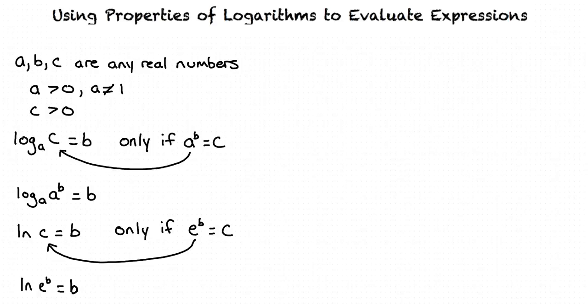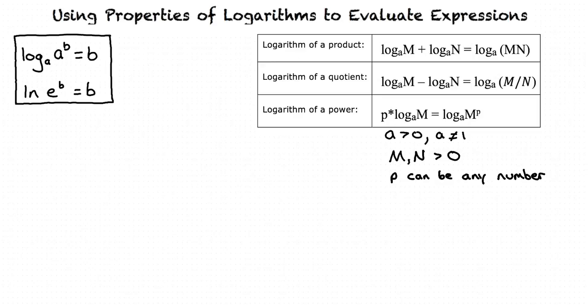Now let's look at the properties of logarithms. These are the three properties of logarithms we use to evaluate expressions. In these properties, a, m, and n are positive numbers, a cannot be equal to 1, and p can be any number.